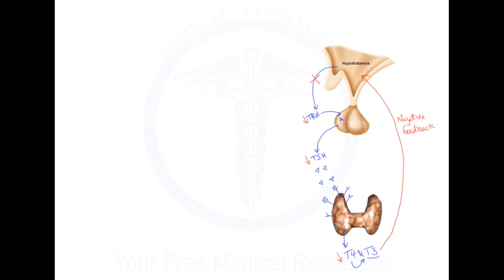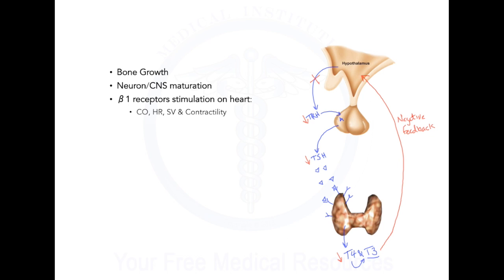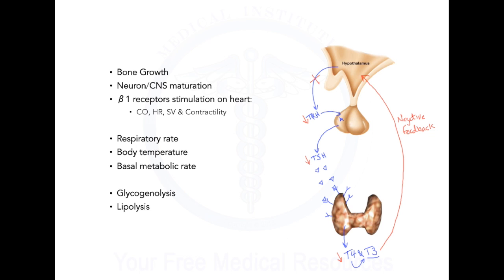The thyroid hormones can pretty much affect our entire body. They can help with bone growth, neuron and CNS maturation. They work on the heart by stimulating the beta-1 receptors, affecting cardiac output, heart rate, stroke volume, and contractility. They can also affect the respiratory rate, body temperature, basal metabolic rate, and can lead to glycogenolysis, lipolysis, and gluconeogenesis.